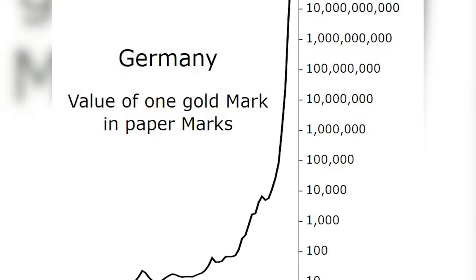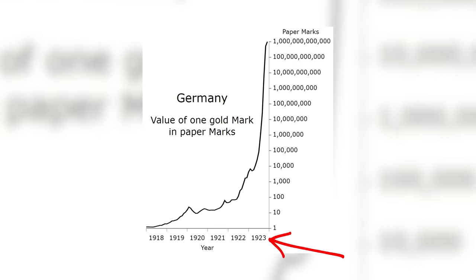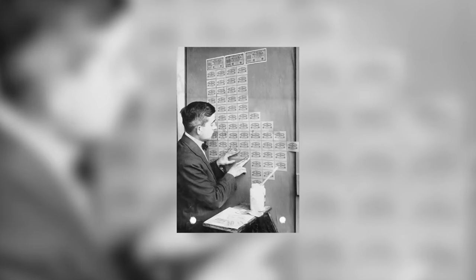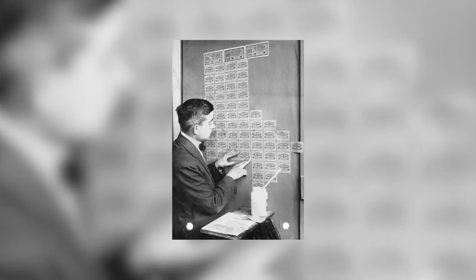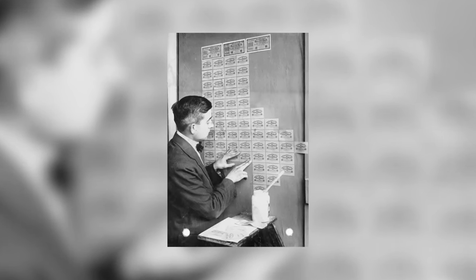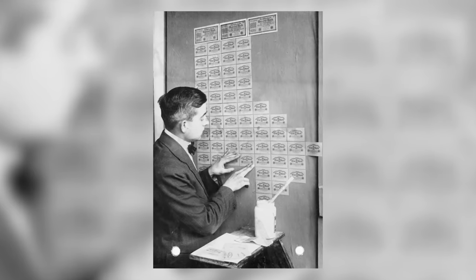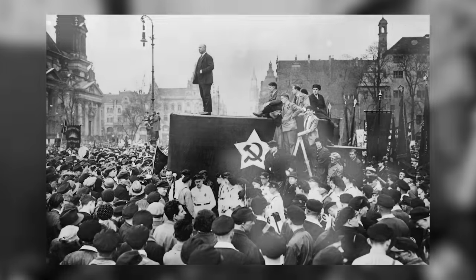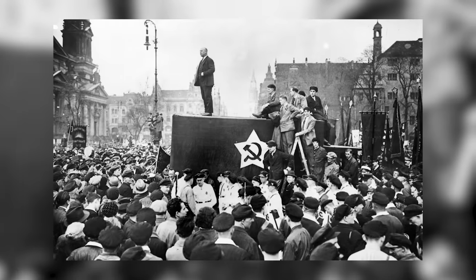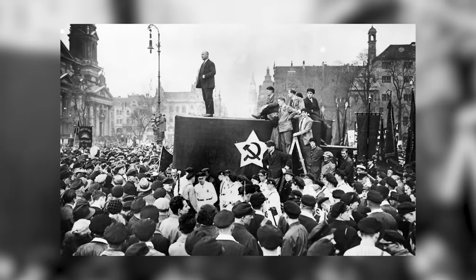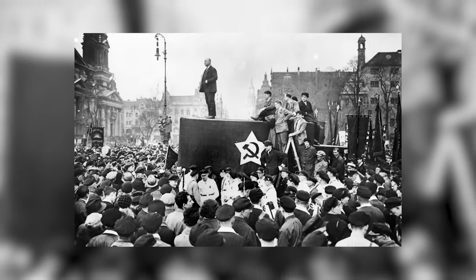At its lowest point in 1923, one trillion German marks was worth one U.S. dollar. Germany's shaky economy was briefly resurrected by a currency reform and the Dawes Plan, which relaxed some reparations Germany had to pay. Nonetheless, it was not enough to prevent the rise of the far right during the 20s.